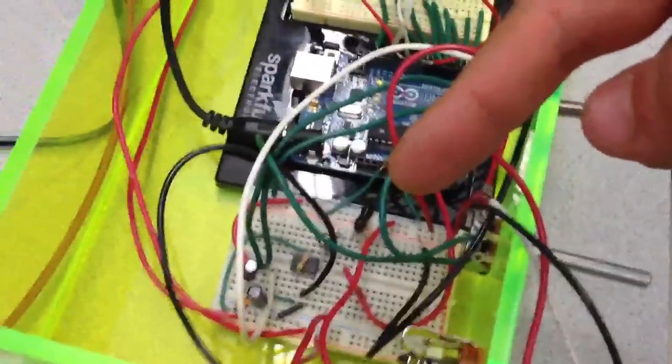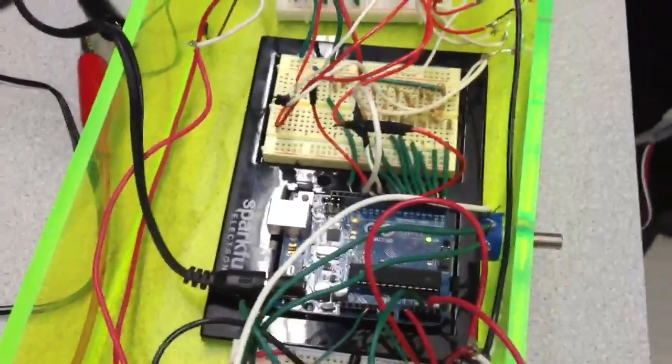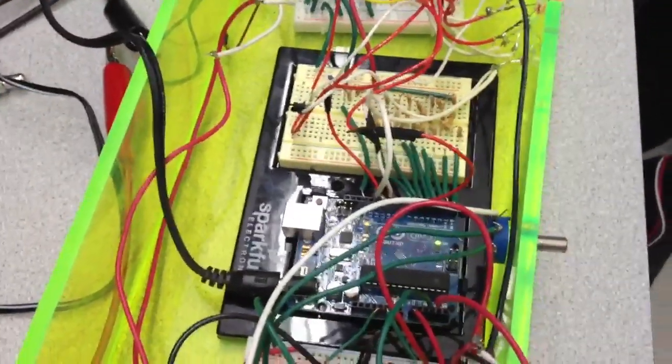Then we take the amplified signal from the preamplifier and put it into the Arduino. This is where we have code to change the sound and create those effects that we showed you earlier.